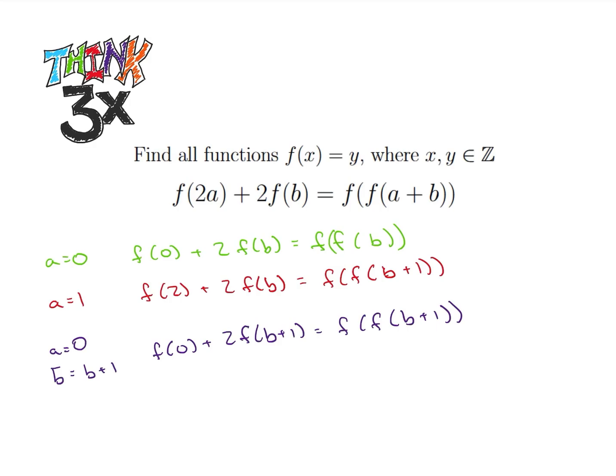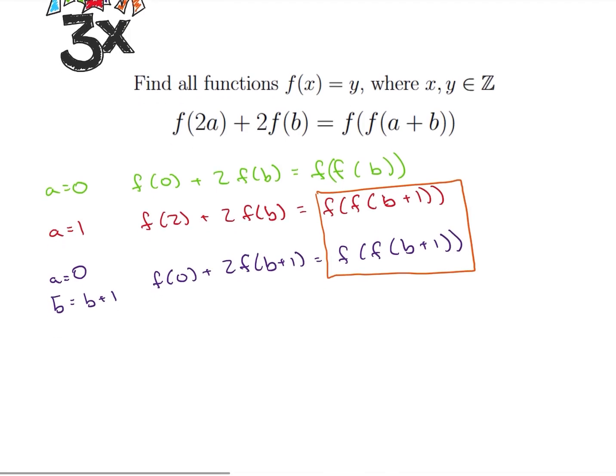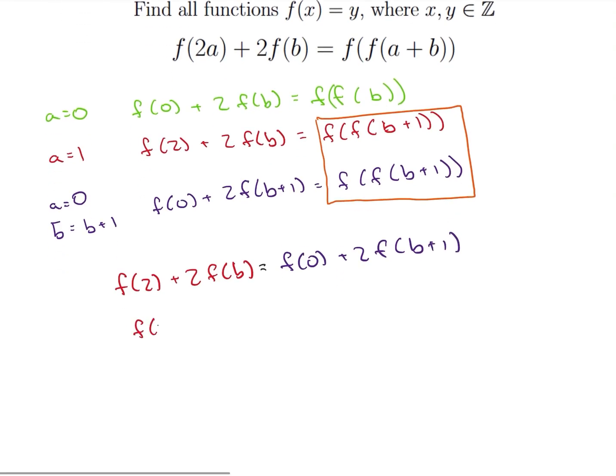But now we notice something pretty cool. On the right side of our equations, I get f of f of b plus 1 for both of these. And what that means is that the left side of each of those equations will be equivalent. So f of 2 plus 2f of b is equal to f of 0 plus 2f of b plus 1. Let's rearrange: f of 2 minus f of 0 equals 2f of b plus 1 minus f of b.